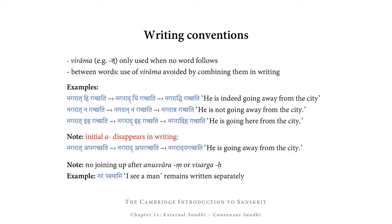There is one more thing concerning Sandhi: Sanskrit writing conventions. Sanskrit reflects pronunciation changes from Sandhi in writing. If a final sound becomes voiced — for example T changes into D — that is reflected in writing. Normally, if a word ends in a consonant and no vowel follows, it is written with a virāma at the end. A virāma is that little diagonal dash at the bottom of a consonant indicating it is not followed by a vowel. However, a virāma is only used at the very end of a sentence. If a word ends in a consonant and another word follows, the virāma is avoided by combining the two words in writing.